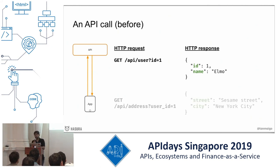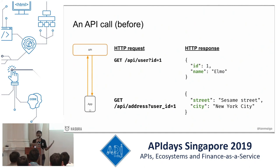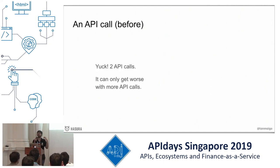This is fine. But the problem starts when you need to make another API call because you want more data. You need to make your profile page richer — instead of just showing the name, you also want to show the address. As a front-end developer, every time you write an API call in your front-end app, the pain increases, and I hate APIs, and I hate my life, and I hate engineering, and I hate the back-end team even more.